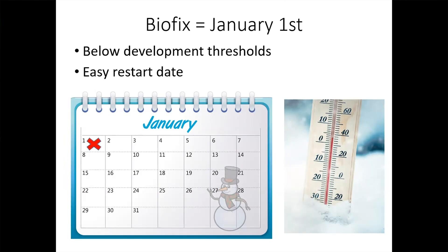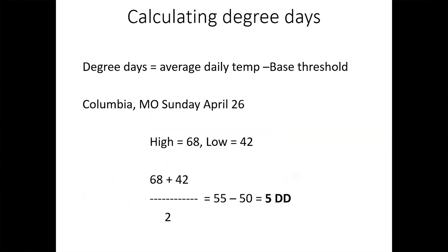Degree days is a pretty simple calculation — there are more complicated models, but we're just using average degree days here. It's based on average temperature minus the base threshold of 50 degrees. For example, in Columbia, Missouri, this past Sunday the high was 68 and the low was 40, giving an average of 55. Subtracting the base of 50, you get 5 degree days for Sunday. We calculate this for each day and add those together on a continuous basis from January 1st.